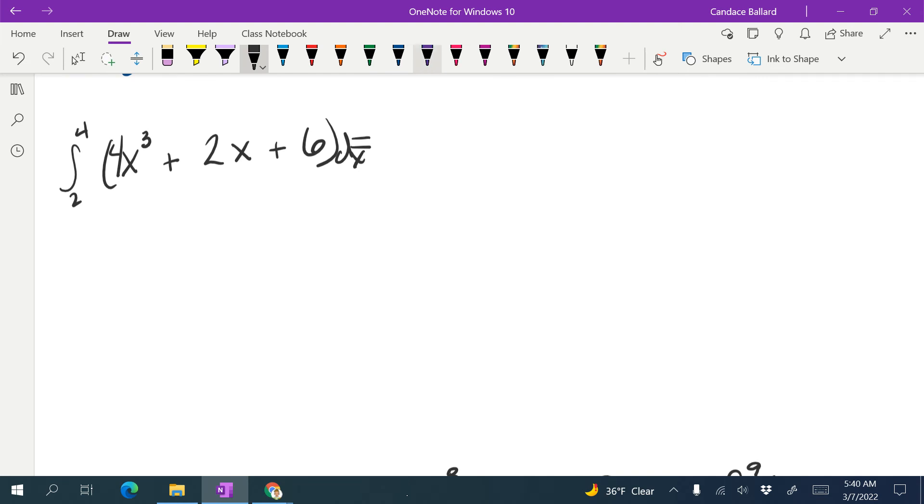All right, so let's go ahead and just do the integration piece, and then we'll do the definite part. So when we integrate 4x cubed, remember I add 1 to the exponent, so we get 4x to the 4th divided by 4. Those nicely cancel, so I just get x to the 4th.